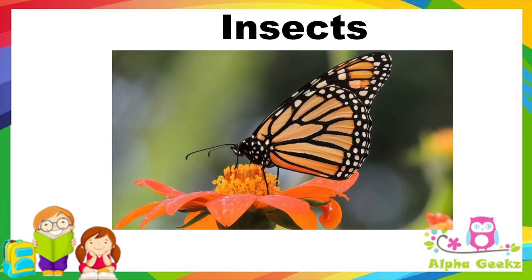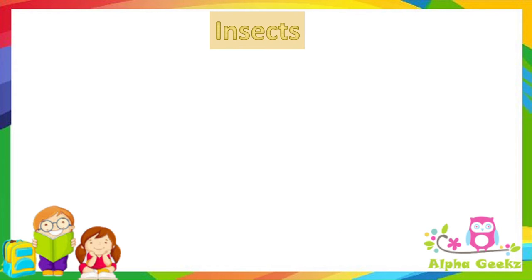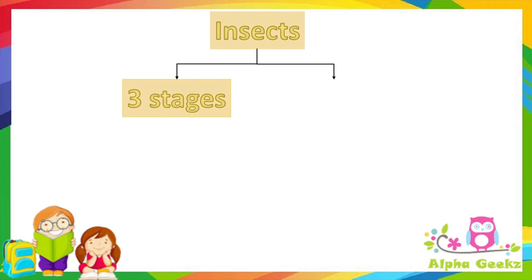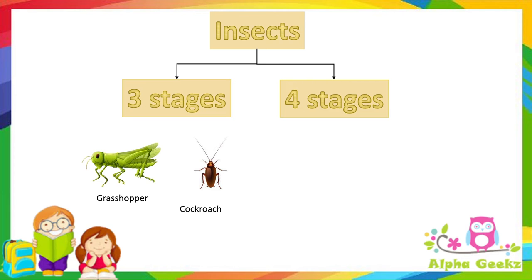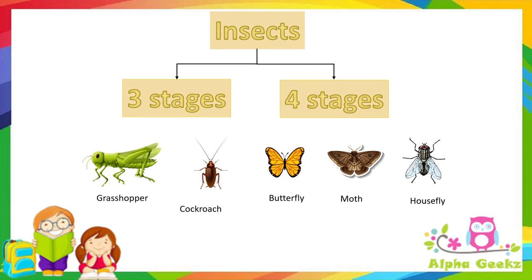Reproduction in insects: depending on the number of stages, the life cycle of insects is of two types — three-staged and four-staged. Grasshoppers and cockroaches have three stages in their life cycle, while butterflies, moths, and houseflies have four stages.